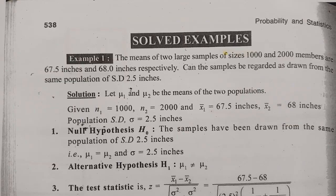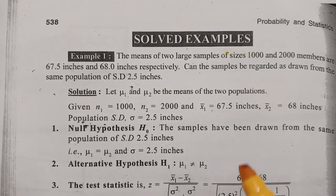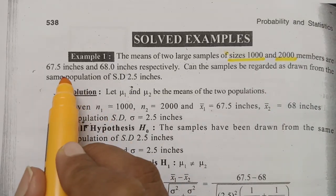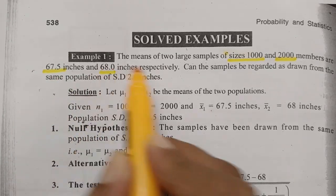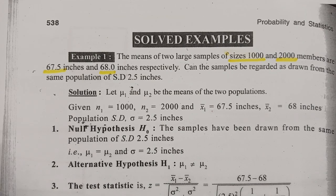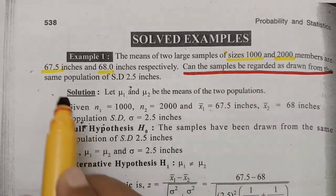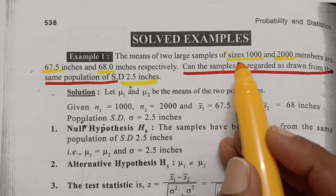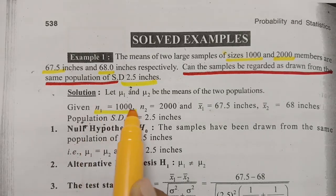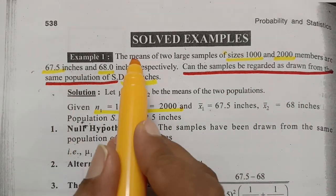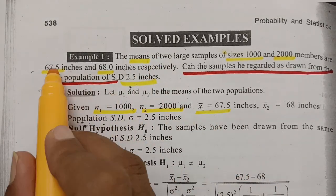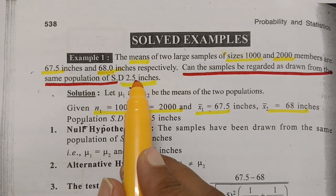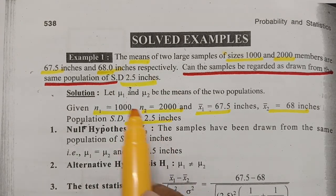Now I'll solve a few problems. The first question: the means of two large samples of sizes N1 equal to 1,000 and N2 equal to 2,000 members are 67.5 and 68 inches respectively. Can the samples be regarded as drawn from the same population with standard deviation of 2.5 inches? So X1 bar is 67.5, X2 bar is 68, and sigma is given as 2.5 inches — sigma1 and sigma2 are not separately given.